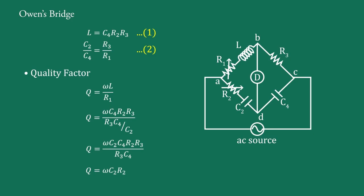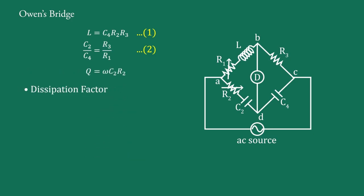But if C is large, it is large in size and high in cost. So we will use this bridge for low and medium quality factor only. Next, the dissipation factor Df: for an R1-L series connection it is defined as Df equal to R1 upon omega·L, which is equal to 1 upon Q. It is calculated from equation 1 and equation 2, or directly from the quality factor. So we get Df equal to 1 upon Q, that is 1 upon omega·C2·R2.